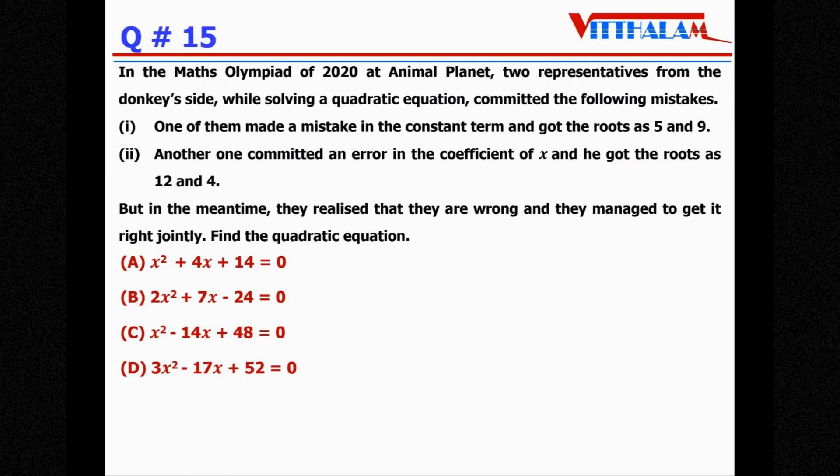Next. In the Math Olympiad of 2020 at Animal Planet, two representatives from the donkey's side, while solving quadratic equations, committed the following mistakes. One of them made a mistake in the constant term and got the roots 5 and 9. Another one committed an error in the coefficient of x and he got the roots 12 and 4. But in the meantime, they realized that they are wrong and they managed to get it right jointly. Find the quadratic equation.